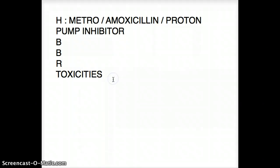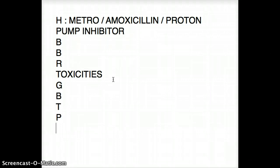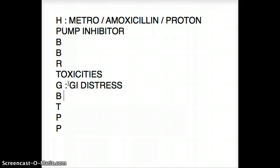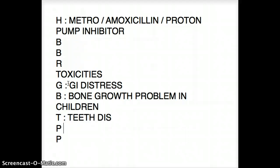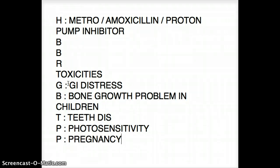Now let's talk about toxicities. There's a mnemonic: GBTPP. G is for GI distress. B is for bone growth problems in children. T is for teeth discoloration. The first P is for photosensitivity. The last P is for pregnancy — tetracycline should be avoided in pregnancy.